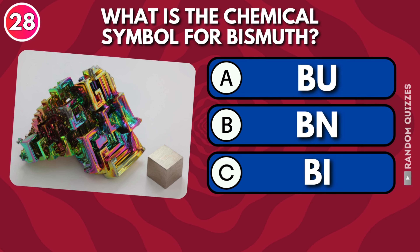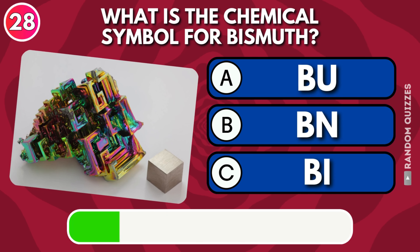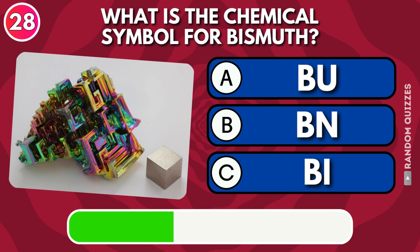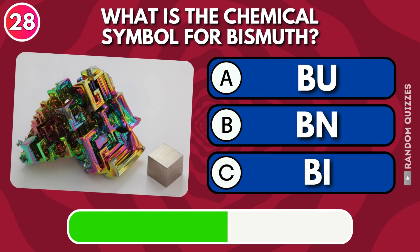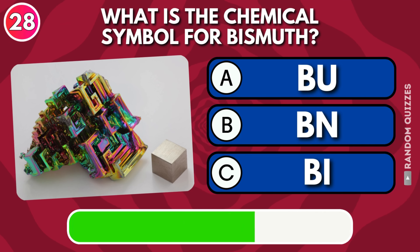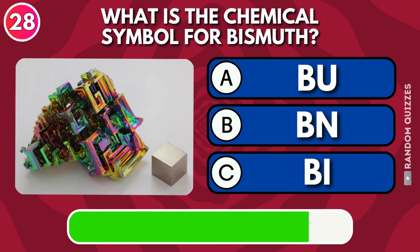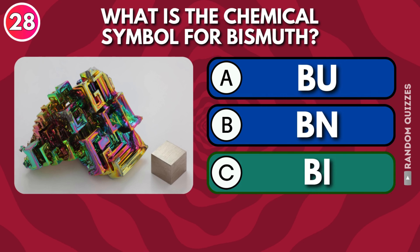What is the chemical symbol for bismuth: Bu, Bn, or Bi? Answer: Bi.